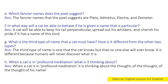G. What is the third type of name that a cat must have? How is it different from the other two types? Answer: The third type of name is one that the cat knows but no one else will ever know. It is different because humans will never discover what it is. H. When a cat is in profound meditation, what is it thinking about? Answer: When a cat is in profound meditation, it is thinking about the thought of a thought of a thought of his name.